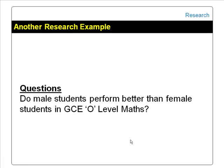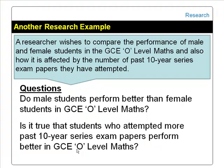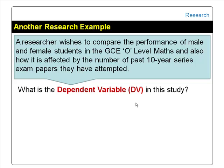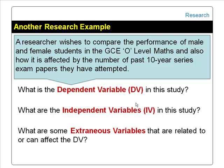Here is another research example. We are interested to find out if male students perform better than female students in GCE O-level mathematics. We are also interested to know whether students who attempted more past 10-year series GCE O-level maths exam papers perform better in O-level maths. What is the dependent variable in this study? What are the independent variables? What are some of the extraneous variables that are related to or can affect the dependent variable?